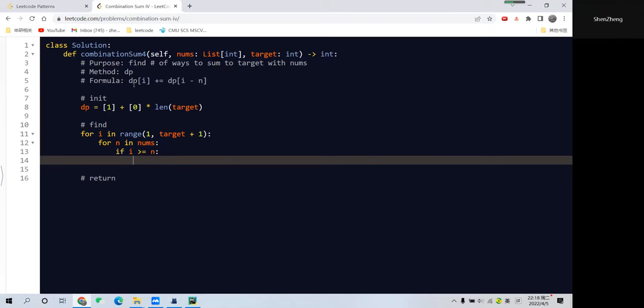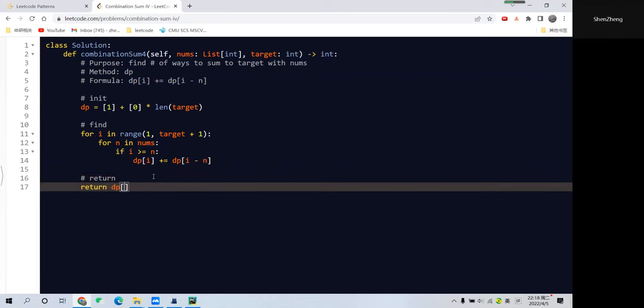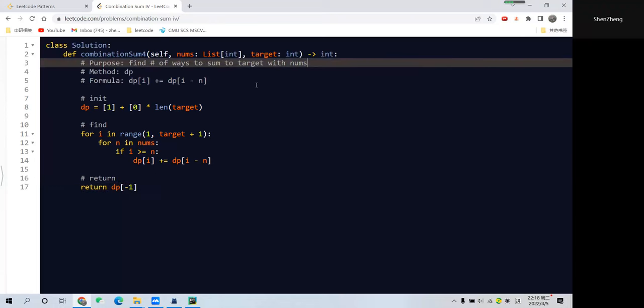If that's the case, we just copy this formula. Every possibility at dp[i] will be found by adding all possibilities at dp[i-n]. Finally, we return dp[target], choosing the last element corresponding to the target. We're finding the number of ways to sum up to this target.